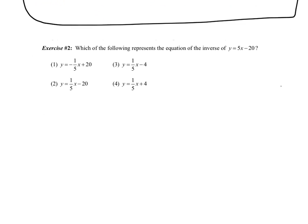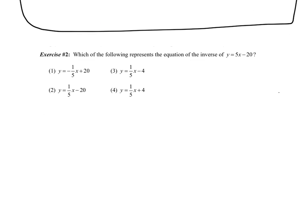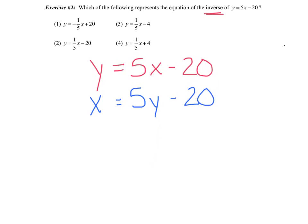Let's try example 2. Which of the following represent the inverse of this equation? Because I saw inverse, I'm going to rewrite my problem, y equals 5x minus 20. I'm going to follow the rule for inverse: switch the x and y. So the x becomes y and the y becomes x. You're halfway done. Now you have to get y by itself. You are always solving for y.